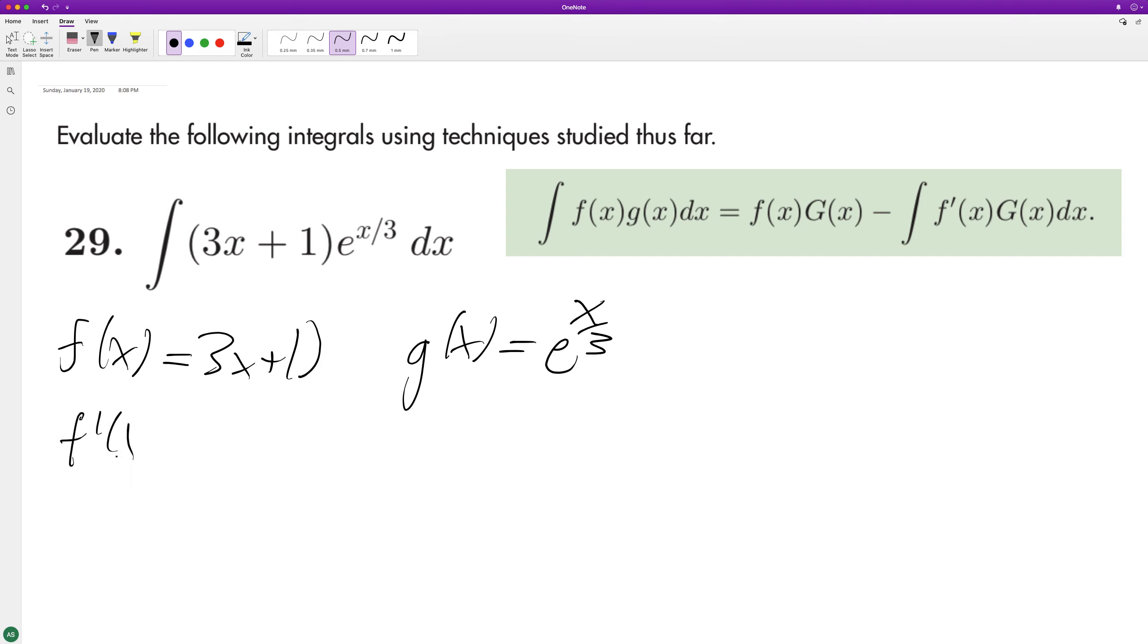So f prime of x here is going to be equal to three and capital G of x, which is the integral of e raised to the x over three, is going to be equal to three e raised to the x over three.